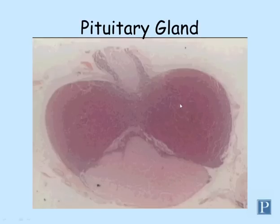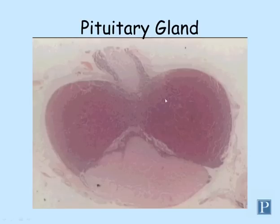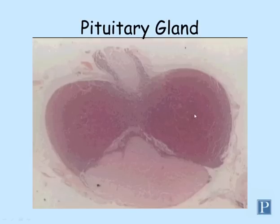Here's another section with a different angle. You can see the pituitary stalk up here. The lighter-staining region in the center is the infundibulum, which is surrounded by pars tuberalis on either side where it wraps around. Here you can see pars distalis, pars intermedia, and pars nervosa. Most of your sections will not have the pituitary stalk, so be able to identify those structures in photographs and on the PowerPoint slides. For your particular slides, focus on these three parts: pars distalis, pars intermedia, and pars nervosa.